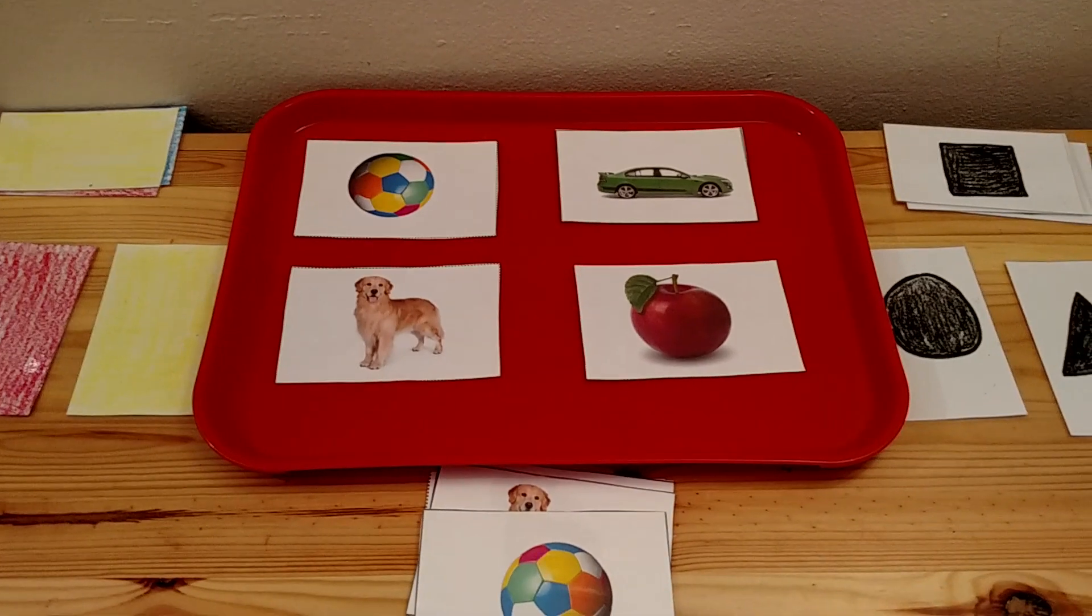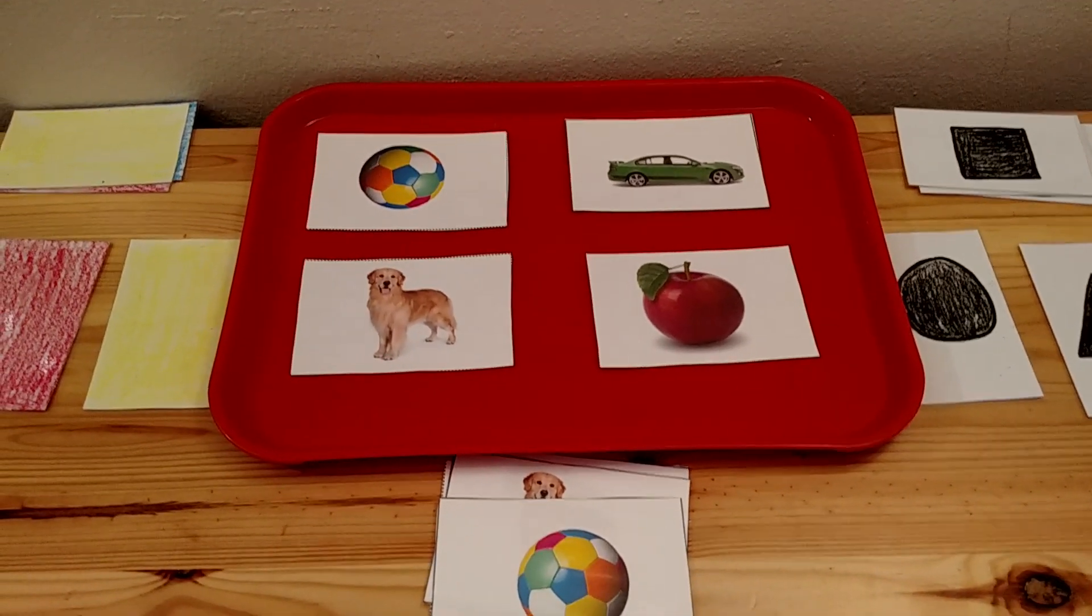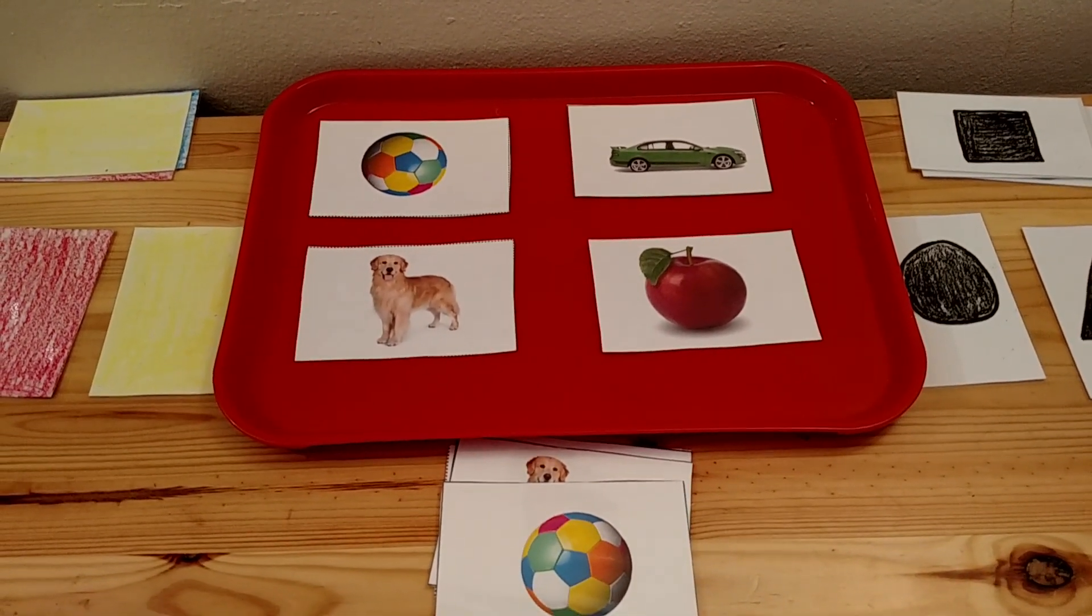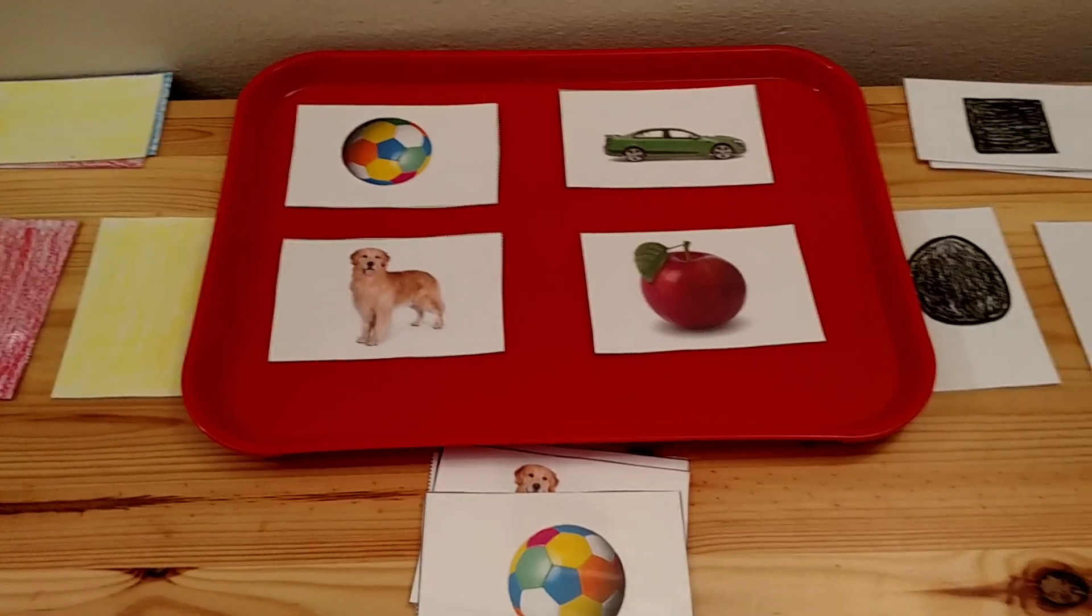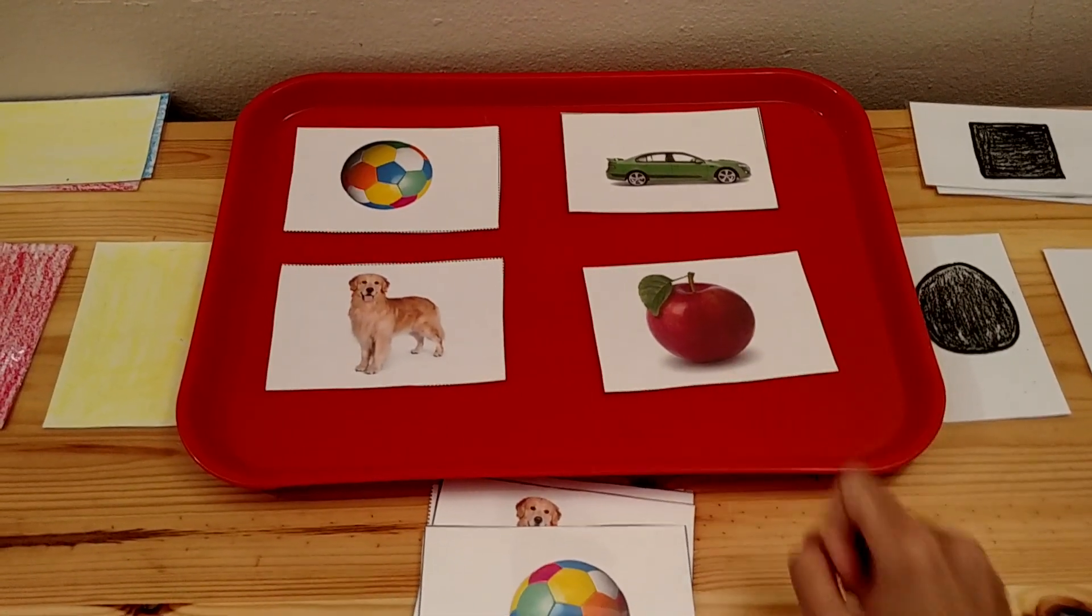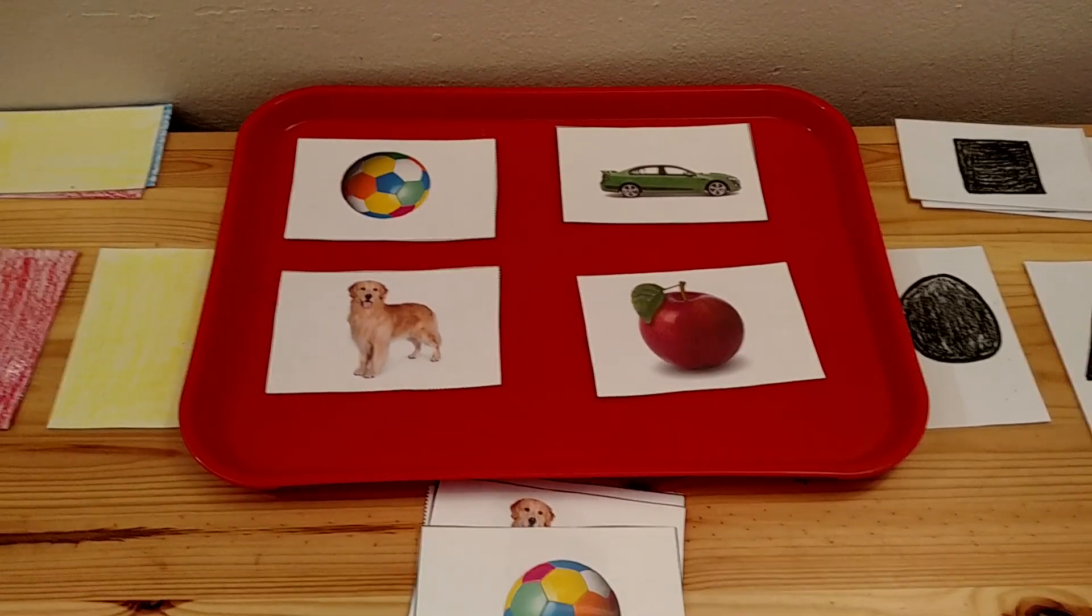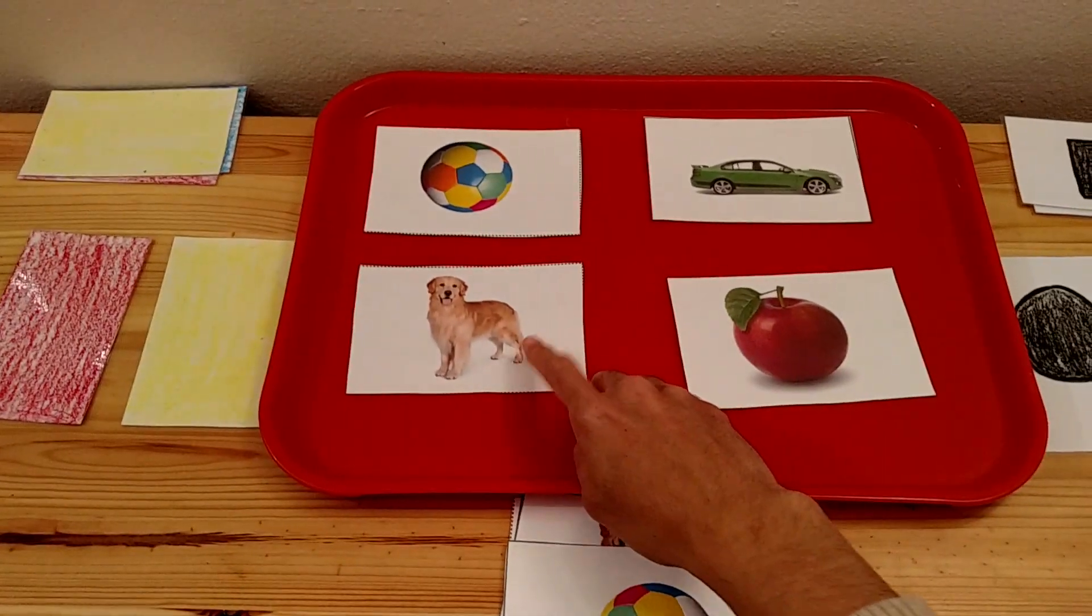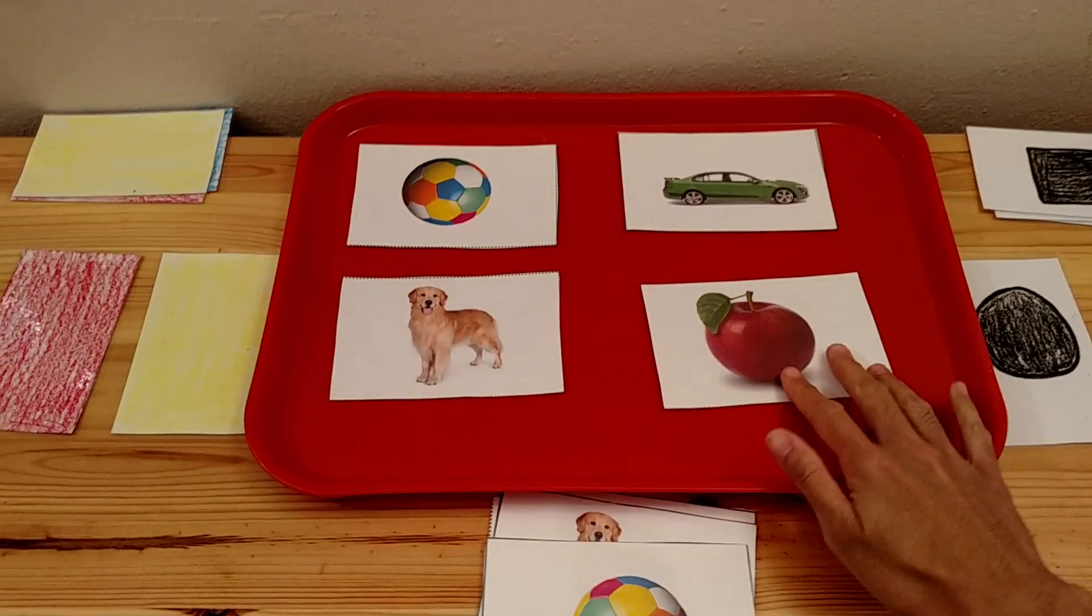You can take it one step further and have the child tell you the names of the objects on the cards if they can speak. What is this? Apple. What is this? Dog. And so on.